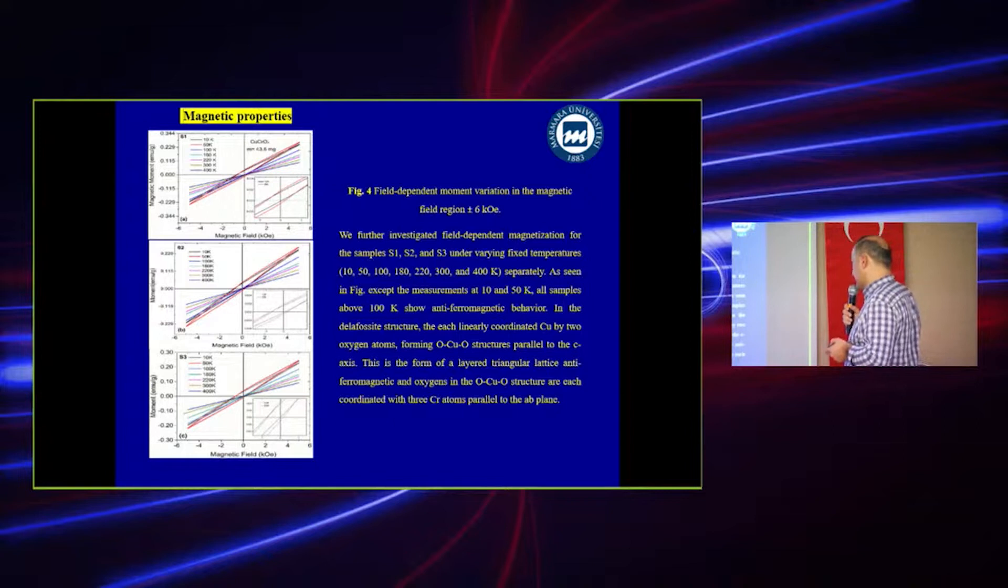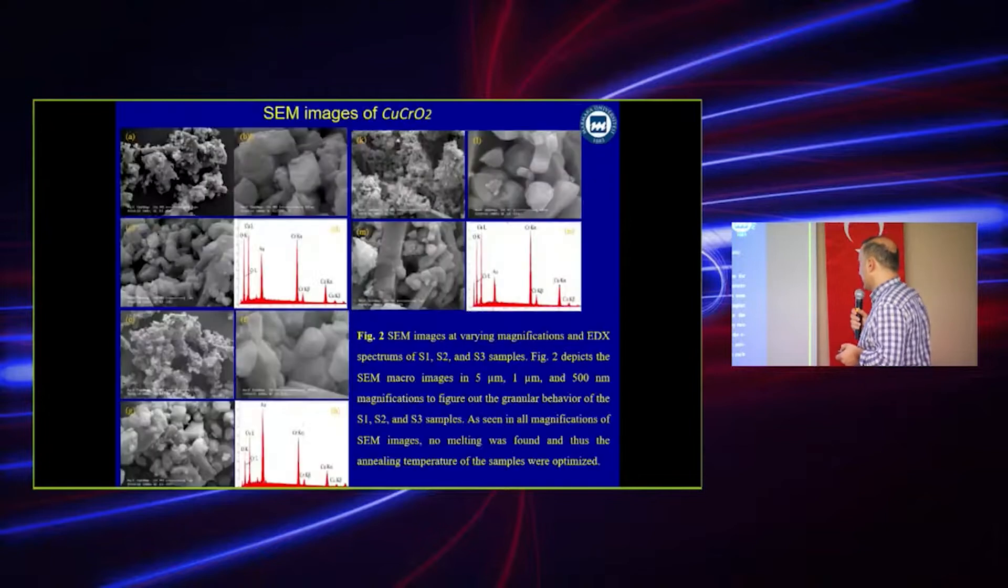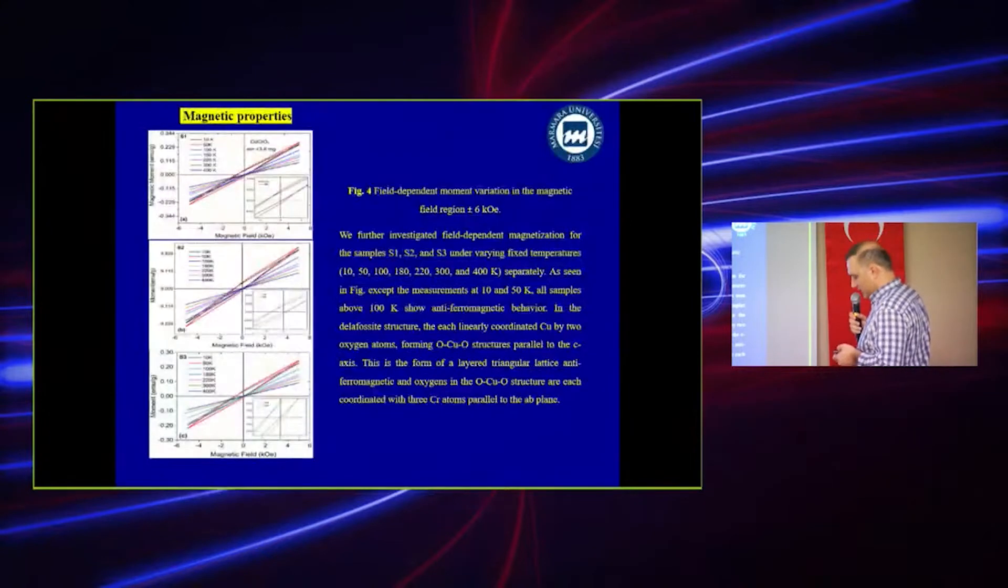As in the figure, except 10 Kelvin and 50 Kelvin, all samples above 100 Kelvin show antiferromagnetic behavior. In the delafossite structure, each linearly coordinated copper atom is coordinated by two oxygen atoms forming copper-oxide structure that is parallel to the c-axis. This is the form of a layered triangular structure. The oxygens in the copper-oxygen structure are each coordinated by three copper atoms out of the ab plane.